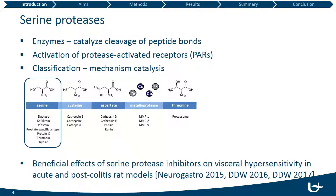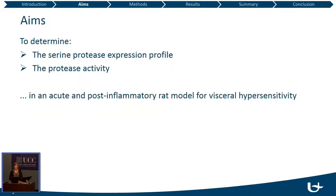In previous studies we demonstrated beneficial effects of serine protease inhibitors on visceral hypersensitivity both in acute and in post-colitis rat models. These data were presented at the NeuroGastro Conference 2015 in Istanbul as well as at DDW 2016 and 2017. The aim of this particular study was to determine the serine protease expression profile as well as the protease activity in an acute and post-inflammatory rat model for visceral hypersensitivity.